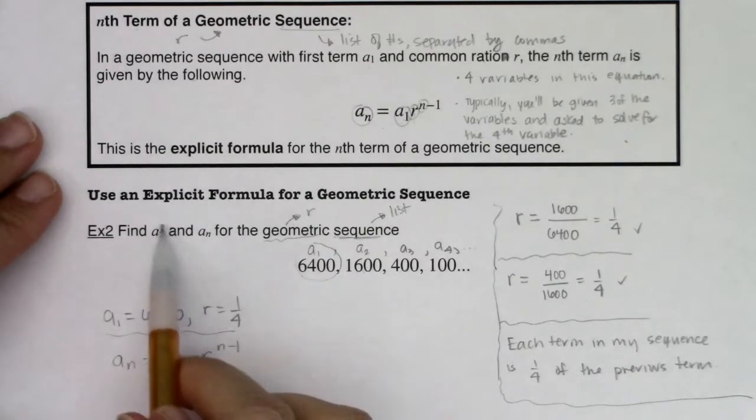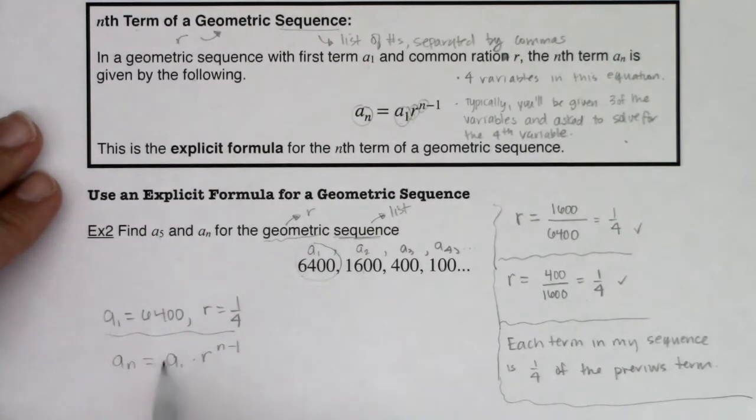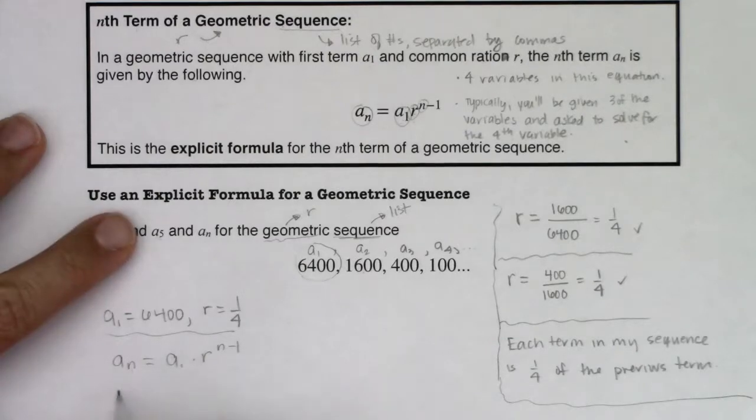Let's try it. I know a sub n is equal to a sub 1 times r to the n minus 1. Now I'm being asked to find a sub 5. So let's put in n equaling 5.